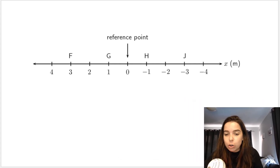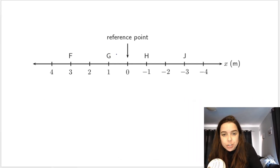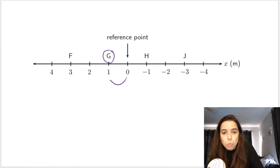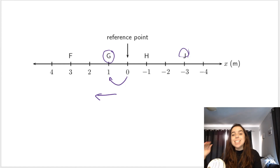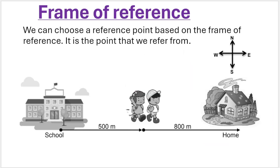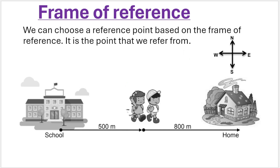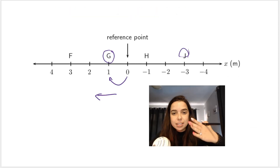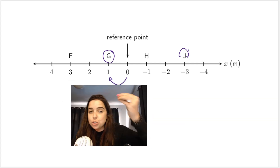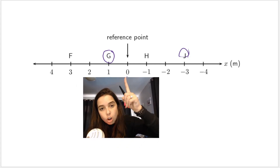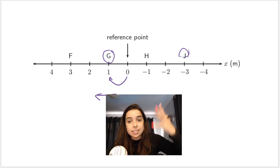If this is my frame of reference and this over here is my origin, also known as the reference point, then I can make the following conclusions. G is one unit to the left, or one unit to the west, of my reference point. J is three units to the right, or three units east, of my reference point. So we describe where things are in comparison to the reference point — starting at the reference point, where is the object situated?